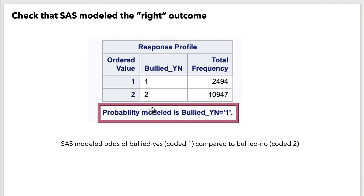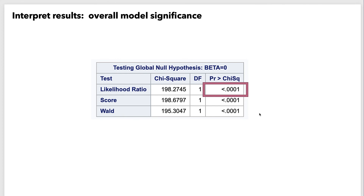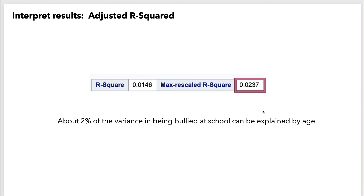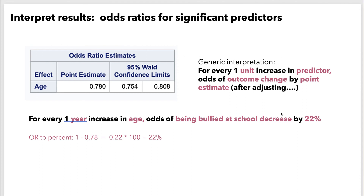Now we can move on to interpreting results. We look at the probability modeled statement to make sure SAS modeled the outcome we wanted — and it did. Next we check if the overall model is significant — it is. So we can move on to interpreting the R-squared statistic. We identify significant predictors; we only had one predictor here and it was significant. For a scale-level predictor, the interpretation is: for every one unit increase in the predictor, the odds of the outcome change by the odds ratio point estimate, after adjusting for the other predictors in the model. We can turn this into a percent: for every one-year increase in age, odds of being bullied at school decrease by 22 percent.